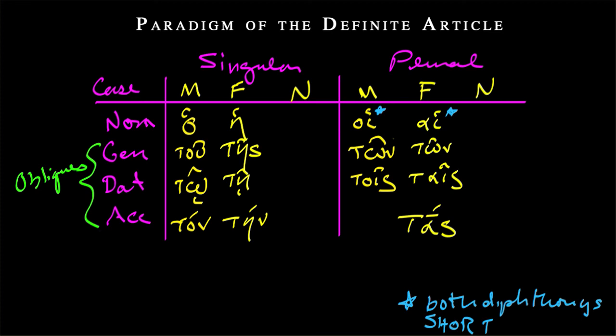Here, instead of a long omicron or long omega, we go back to the diphthong, tous. So that is naturally long. And then again, we can just give it an acute accent for now.